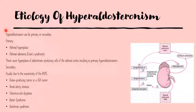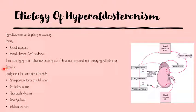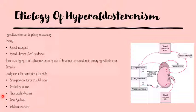Hyperaldosteronism can be primary or secondary. When primary, it is because of adrenal hyperplasia or an adrenal adenoma — in which case we call it Conn's syndrome — and these lead to hyperplasia of cells in the zona glomerulosa. When secondary, it is usually because of overactivity of the renin-angiotensin-aldosterone system, which could be due to a renin-producing tumor or juxtaglomerular apparatus tumor, renal artery stenosis or fibromuscular dysplasia causing renal artery stenosis, or genetic causes such as Bartter syndrome or Gitelman syndrome.